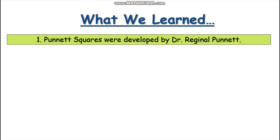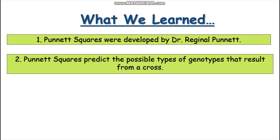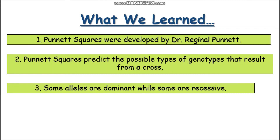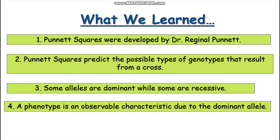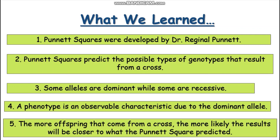So what have we learned from this video? One, Punnett Squares were developed by Dr. Reginald Punnett. Two, Punnett Squares predict the possible types of genotypes that result from a cross. Three, some alleles are dominant while some are recessive. Four, a phenotype is an observable characteristic due to the dominant allele. And five, the more offspring that come from a cross, the more likely the results will be close to what the Punnett Square predicted.